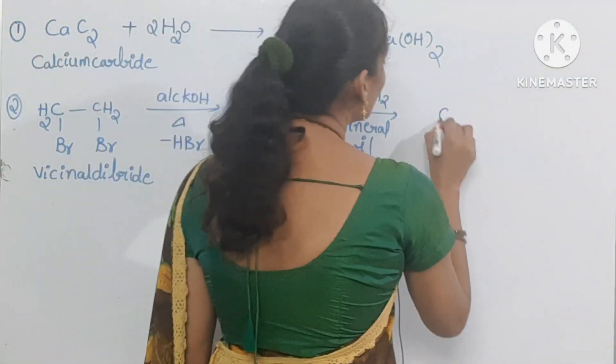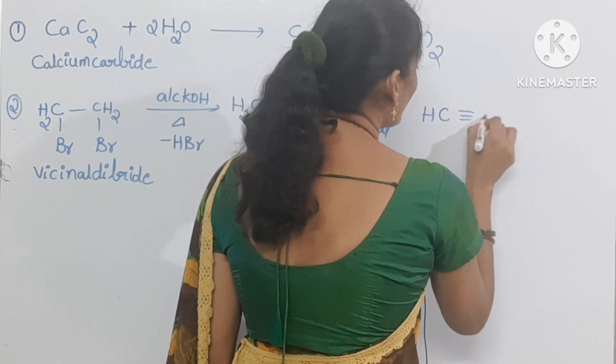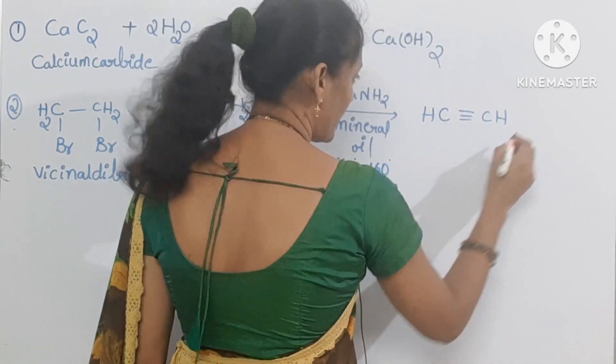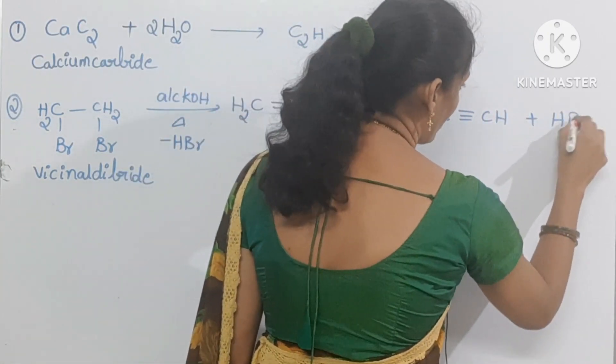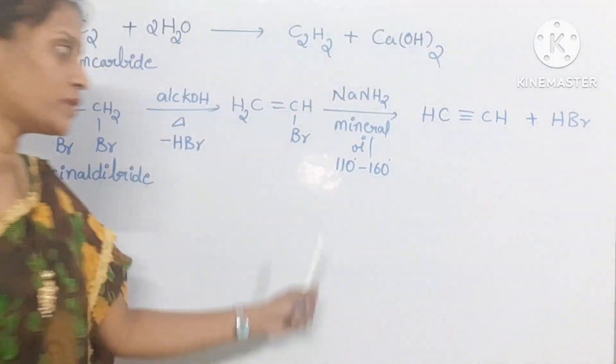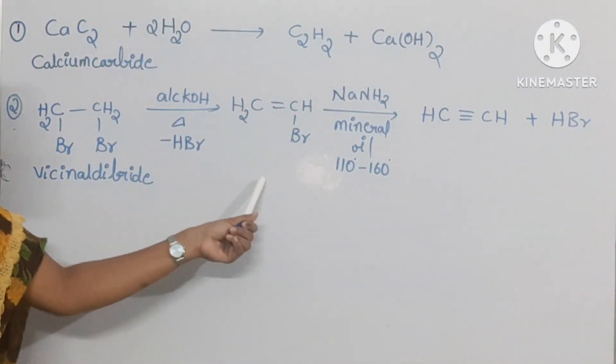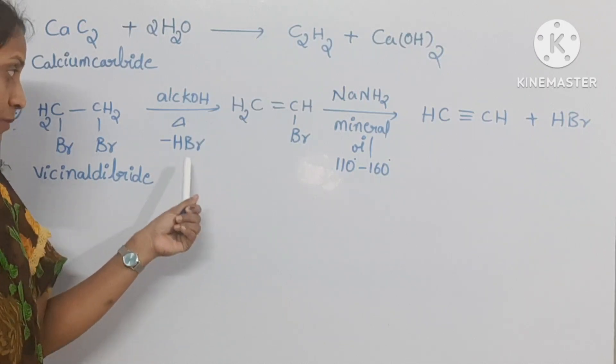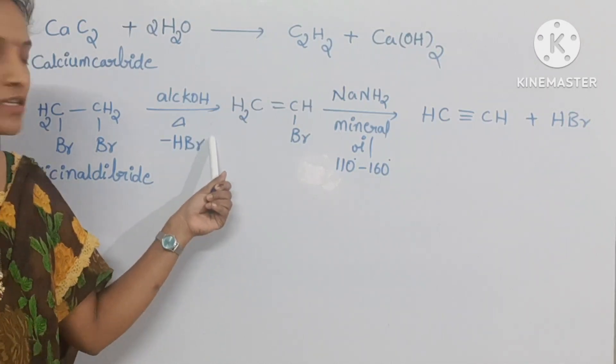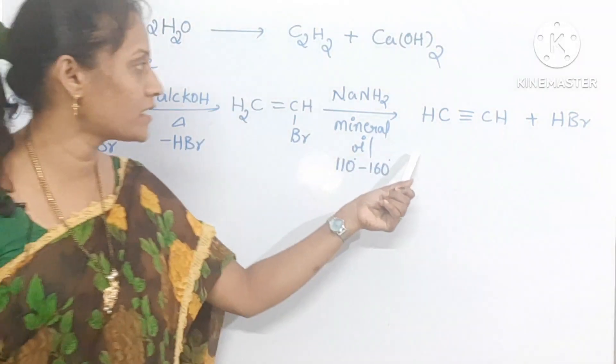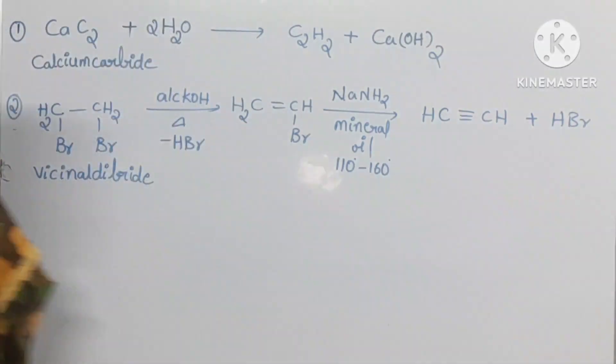Here another HBr would be eliminated. Overall two moles of HBr are eliminated during this process, but the first elimination of HBr needs alcoholic KOH and the second step needs NaNH2. This is one preparation method.